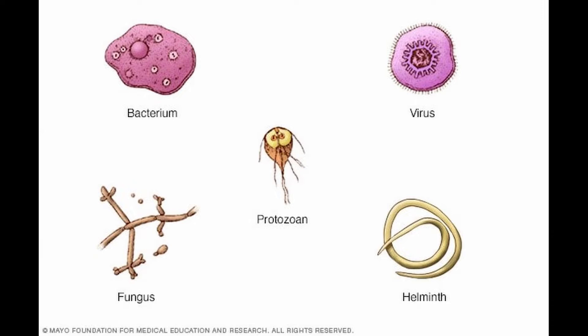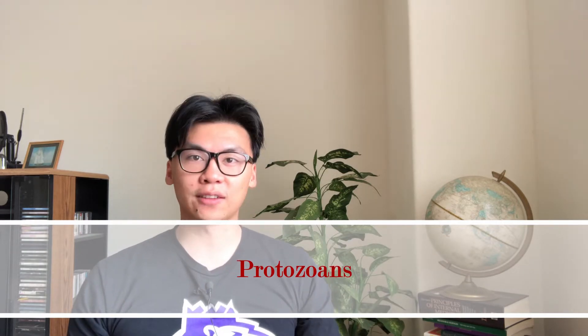Infectious diseases come from five main causes: bacterial, viral, fungal, and some lesser-known ones like helminths and protozoans. We'll talk about protozoans in this video. Protozoans are kind of cool — they were discovered in 1880 and bounced around from classification to classification until they landed on their own. They have really cool attributes: they can reproduce asexually, they can lie in dormant cysts which allow them to survive harsh conditions, some are parasitic, and they're found everywhere — in moss, soil, and water.